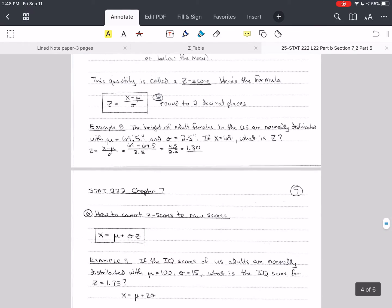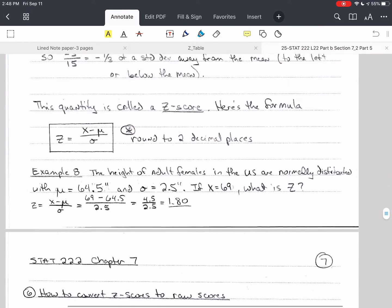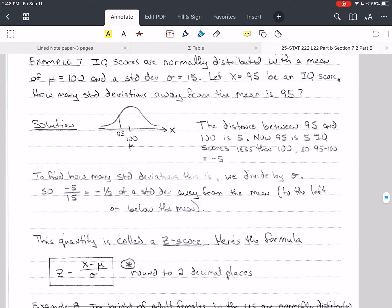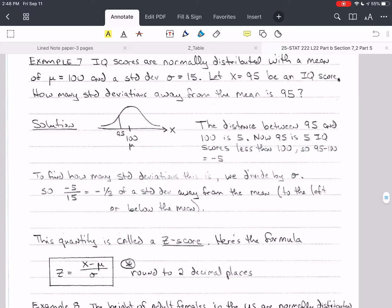Okay, so last time we did this problem where we talked about how many standard deviations away from the mean a value is, and we came up with the answer that in this case z was negative 0.33. That means it's a negative one-third of a standard deviation away from the mean, and because it's negative, that means it's below the mean.